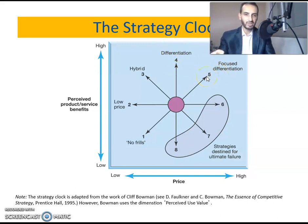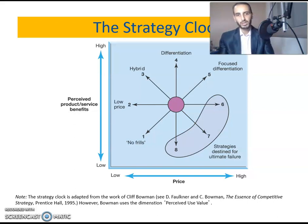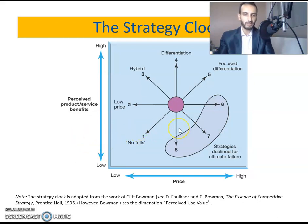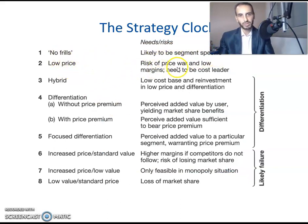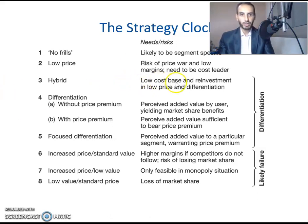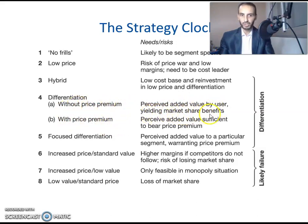Differentiation, position four, is like quality — for example for luxury cars. Position five is focused differentiation for a specific segment, such as luxury cars — here you gain a price premium because of higher price than standard differentiation. Positions six, seven, and eight represent strategies destined for ultimate failure because of high prices combined with low service benefits — unless the company is a monopoly. No frills is likely to be segment-specific; low price risks a price war if others engage in it, leading to low margins, so the company needs to be a true cost leader.